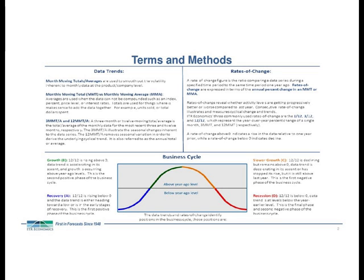When your 12-12 reaches a peak and begins to decline but is still above the zero line, you enter Phase C, slower growth. I consider this the cautionary phase of the business cycle — you're still above the year-ago level and still expanding, but the pace of growth is slowing and beginning to decline. Once your 12-12 falls below the zero line, you fall into Phase D recession. It's important to note that this is a stylized or theoretical model of the business cycle. In real industry, we don't always see all four phases move one after the other in a nice sequential fashion.